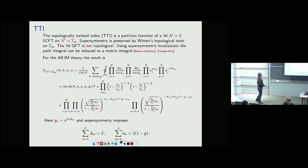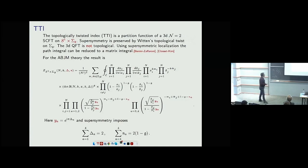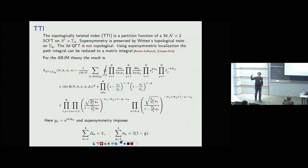I have the integers N and k specifying the theory, and I have analogs of the real masses which I call Δ, and integers n which are background magnetic fields for the flavor symmetries — those are the parameters compatible with SUSY. I can ask what this answer is at large N as a function of these quantities. These parameters obey constraints essentially due to N=2 supersymmetry: you can think of these Δ's and n's as associated with the Cartans of the SO(8) R-symmetry, ensuring you keep two supercharges.